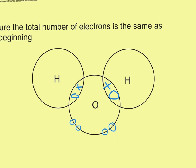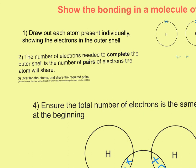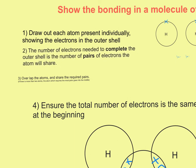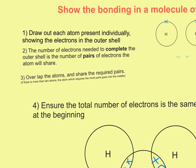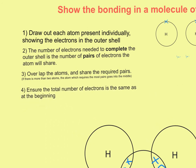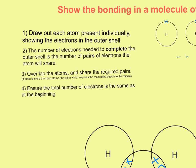The hydrogen has a full outer shell because it has two electrons, and since that's the first shell, it's now full. The oxygen has eight electrons, showing that its outer shell is complete. To summarise the steps: draw out each atom individually; work out the number of electrons needed to complete the outer shell — that's the number of pairs the atom will share; overlap your atoms and share the required number of pairs; and finally ensure the total number of electrons at the end is the same as at the beginning. And that's how you draw covalent bonding.